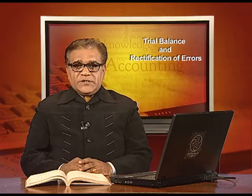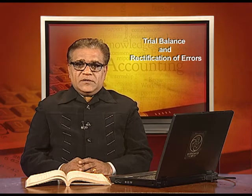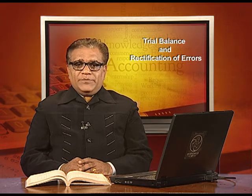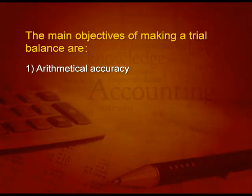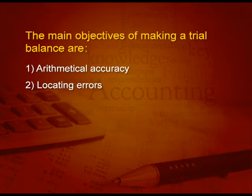The main question is how to make a trial balance. First of all, we note all the balances from the ledger — all the debit balances in the debit column and all the credit balances in the credit column. Then at the end, we check whether both sides are tallying or not. If not, then there is an error which has to be corrected or rectified. The main objectives of making a trial balance are: first, to check arithmetical accuracy; second, to locate errors; and third, to prepare final accounts.